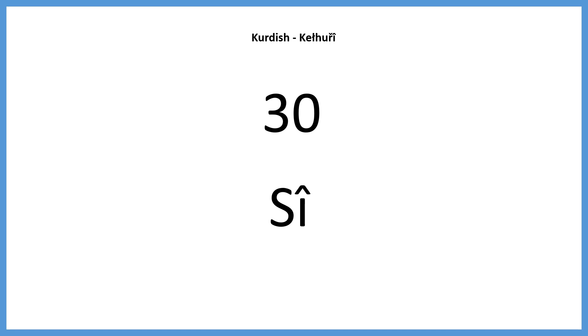So now we know that if we wanted to say 31, we would say siu yek. And if we wanted to say 32, we would say siu du.